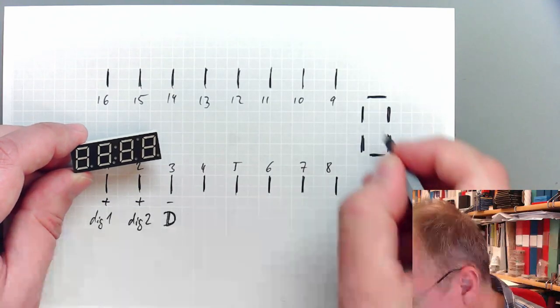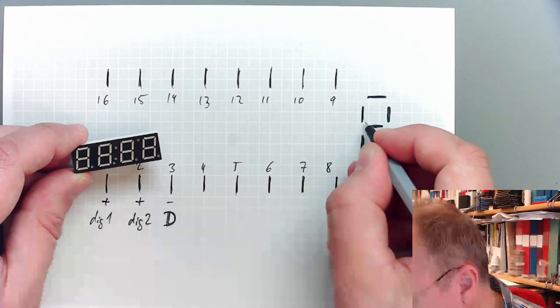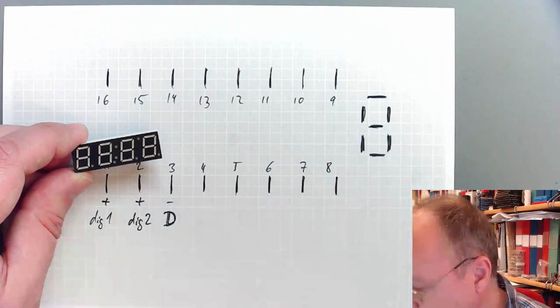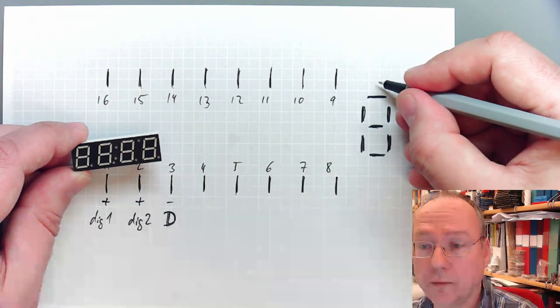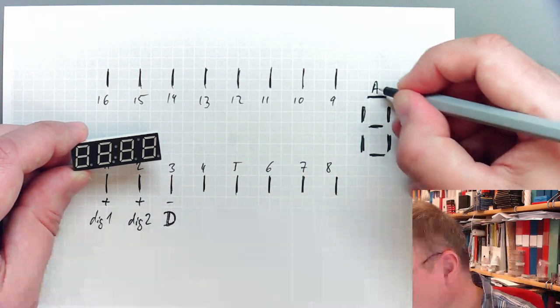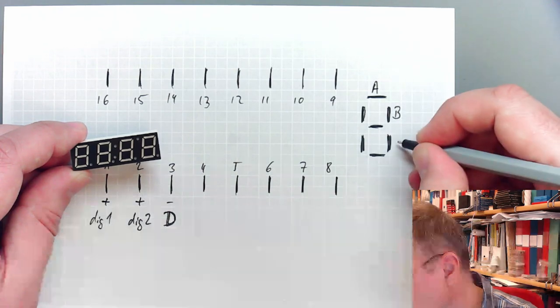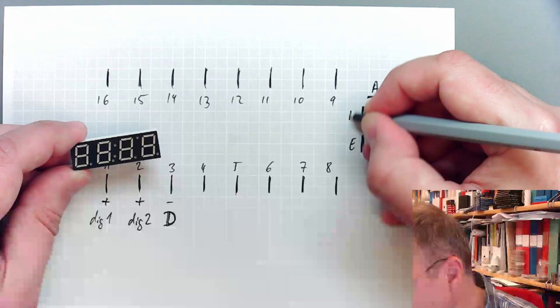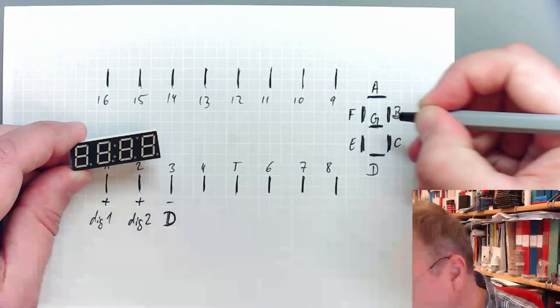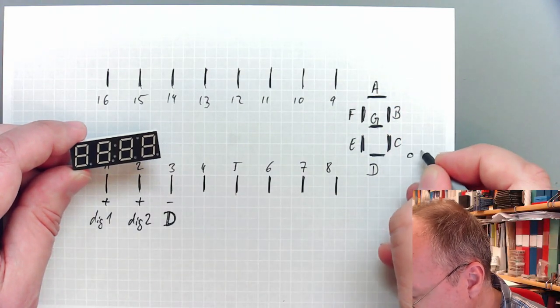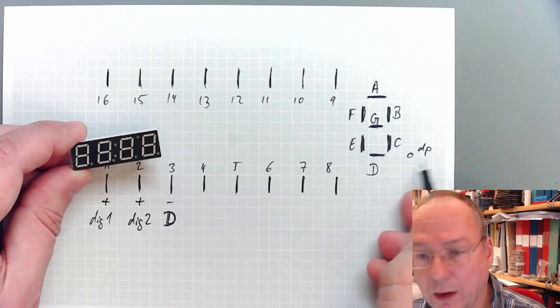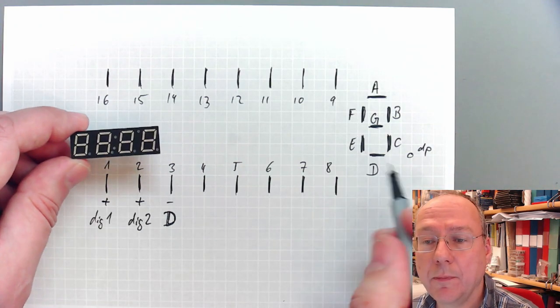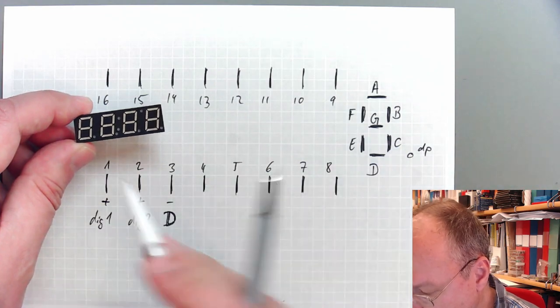In a seven-segment display like this, the individual segments are named with letters. So we have these seven segments, and the numbering or lettering starts up here with the letter A, then we have B, C, D, E, F, and G. And all our numbers also have a decimal point which I call DP right now. So that's down here.